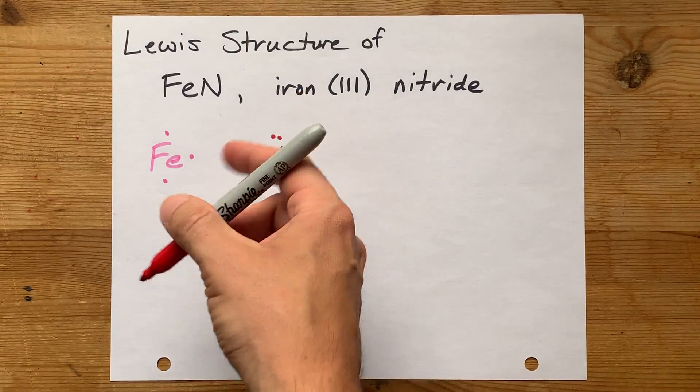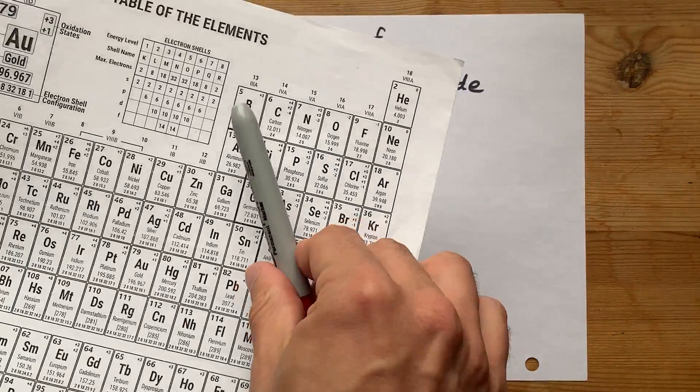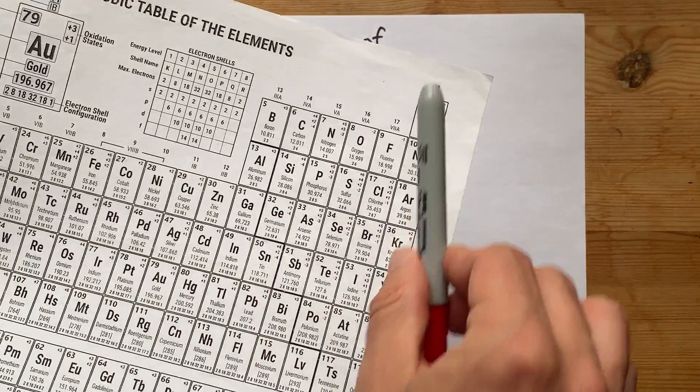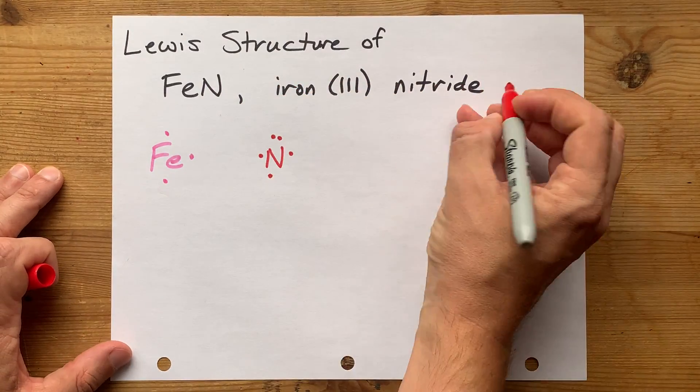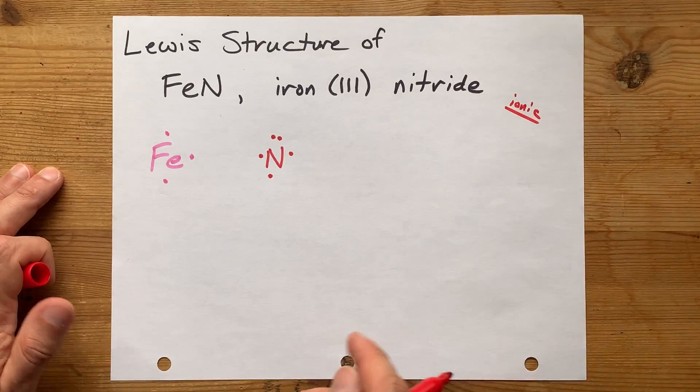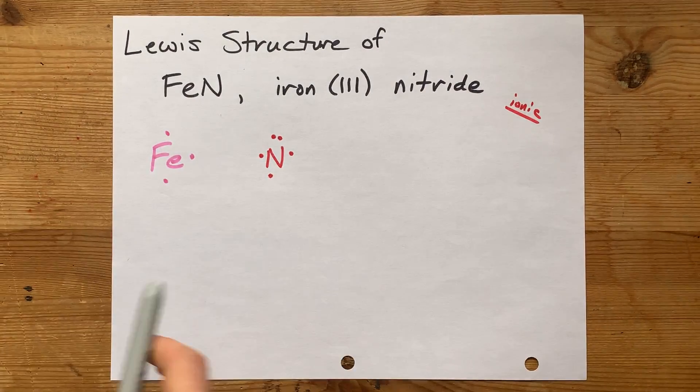Now, iron is a metal. You probably know that just by knowing what iron is. Because nitrogen is a non-metal that comes from the right-hand side of that staircase, a metal and a non-metal combined will make an ionic compound, which means there's a transfer of electrons from metal to non-metal.